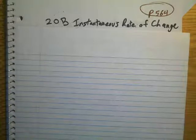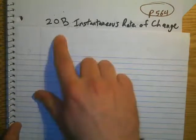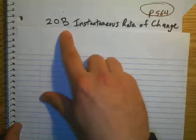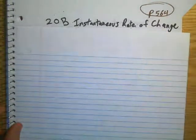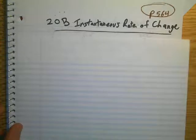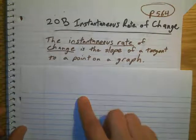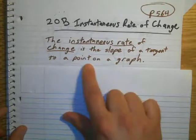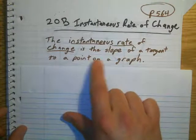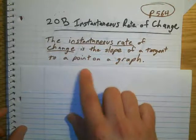Hello, IB Math Studies students. Today we are going to talk about instantaneous rate of change. What is an instantaneous rate of change? The instantaneous rate of change is the slope of a tangent line to a point on a graph.